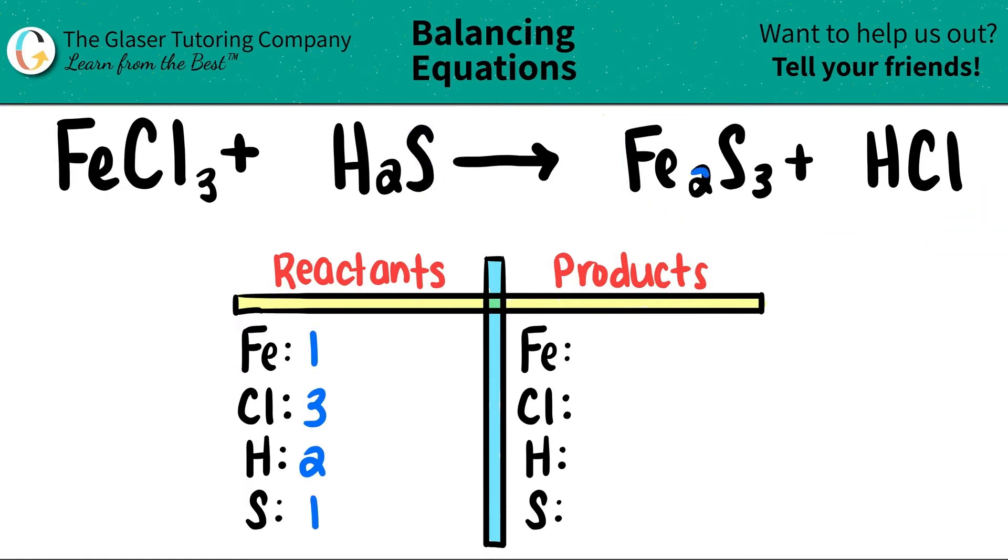Coming over to the product side, I have two irons. I'm going to put a two here. I have three sulfurs. So I'm going to put a three down here. And for both H and Cl, I don't see any subscripts. So one H and one Cl.